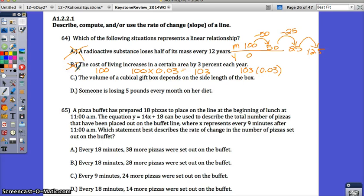Option C: The volume of a cubic gift box depends on the side length of the box. Or option D: Someone is losing 5 pounds every month on her diet. C might be kind of hard for you to think about. But let's think about D. Someone is losing 5 pounds every month. They're taking away 5 pounds for each month. If you graph that, would that be linear? Yes. There's a constant change that's happening every single month. Even if you couldn't figure out how to rule out C, D is your correct answer.